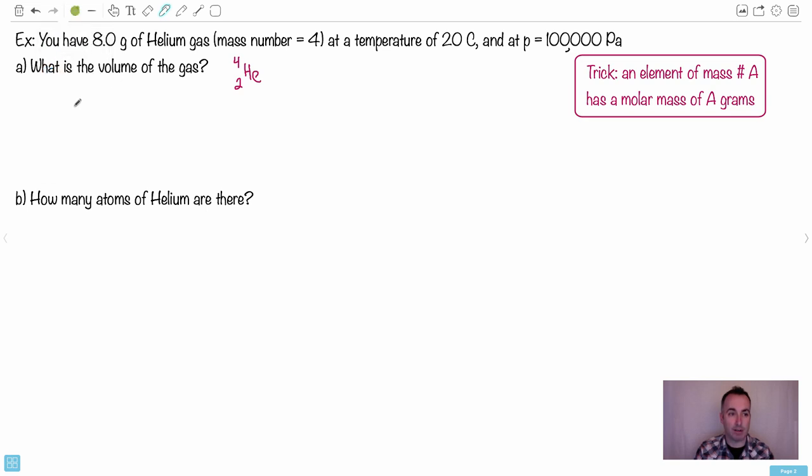Now of course we can use the ideal gas equation, remember that one: PV equals nRT. You can look that one up if you need to. And from that then we could get the volume pretty easily, right? V then equals nRT divided by P. Awesome. Okay, here's the problem though: I don't know n.